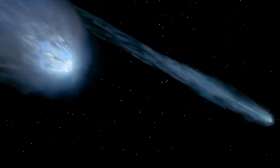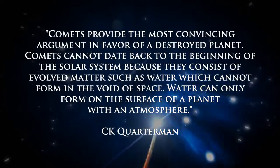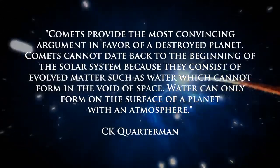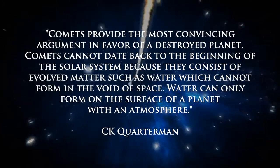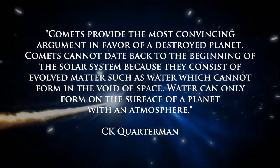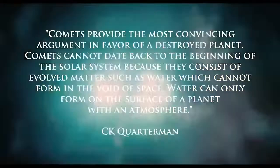Further evidence in our solar system can be found with comets. Comets provide the most convincing argument in favor of a destroyed planet. Comets cannot date back to the beginning of the solar system because they consist of evolved matter, such as water, which cannot form in the void of space. Water can only form on the surface of a planet with an atmosphere.